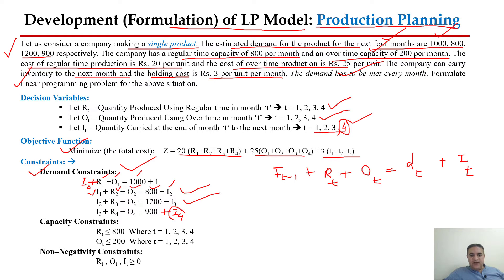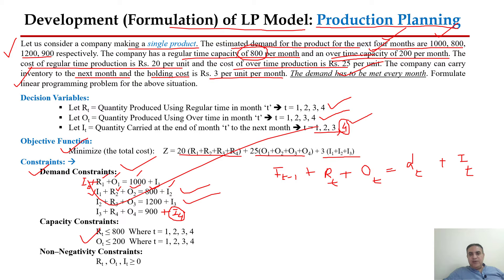We have two types of capacity constraints: regular time production capacity and overtime production capacity. Every month our regular time production capacity is 800, so r1 ≤ 800, r2 ≤ 800, r3 ≤ 800, and r4 ≤ 800. Regarding overtime production capacity: o1 ≤ 200, o2 ≤ 200, o3 ≤ 200, o4 ≤ 200. These are the complete set of constraints for our linear programming model.